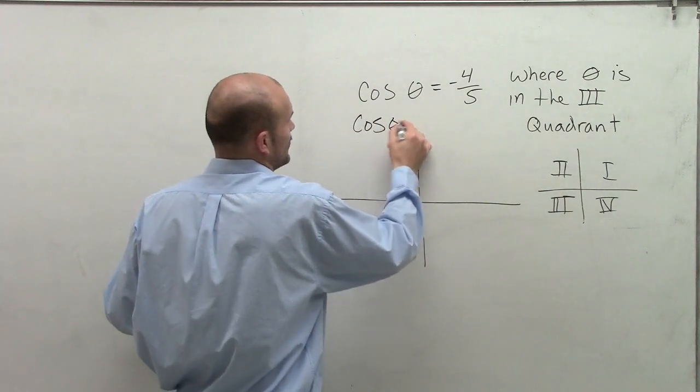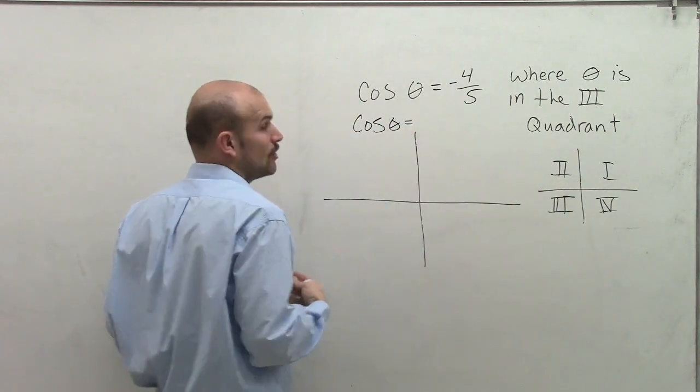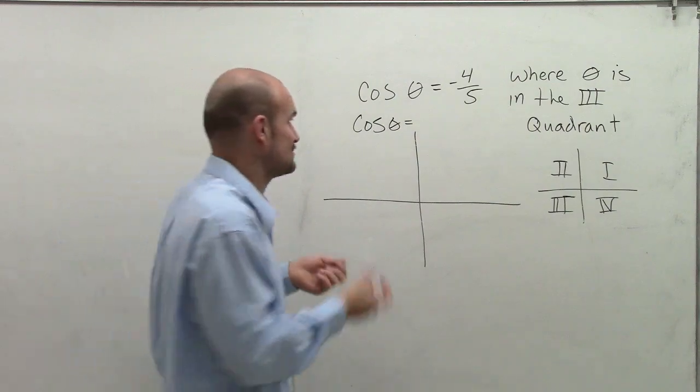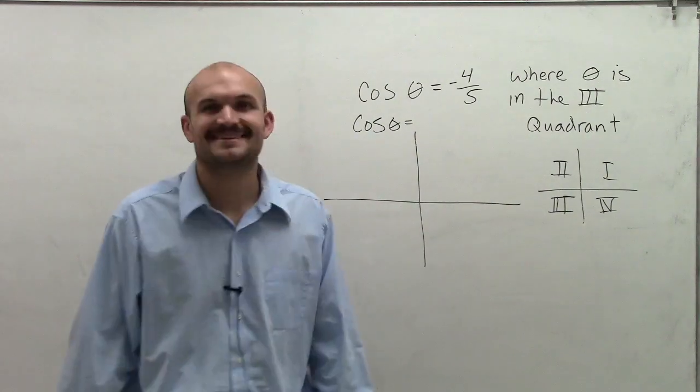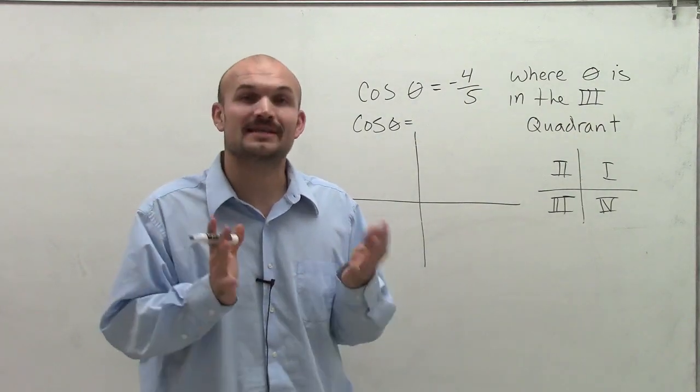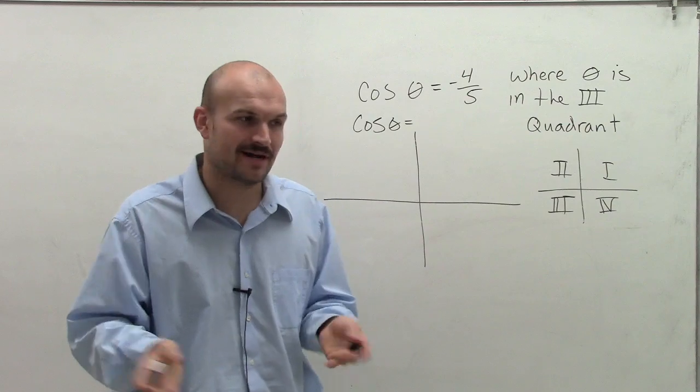Remember, cosine of theta represents the adjacent over the—I'm sorry. The cosine of theta represents, in a triangle, the adjacent side over the hypotenuse.